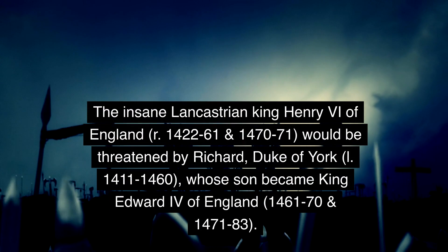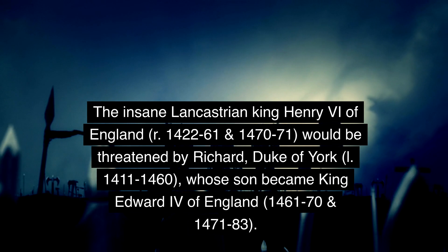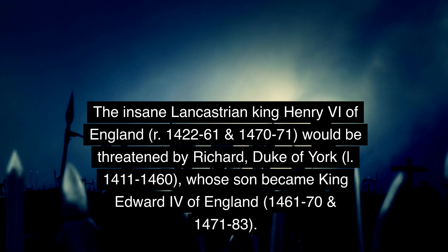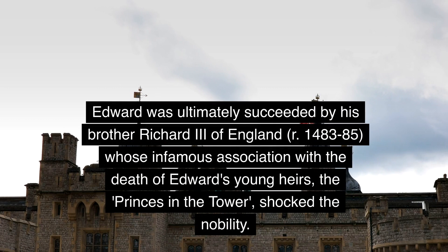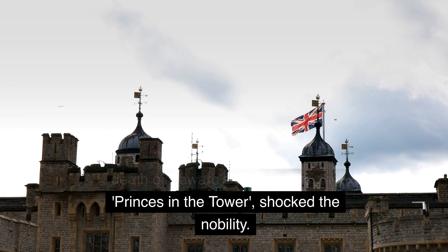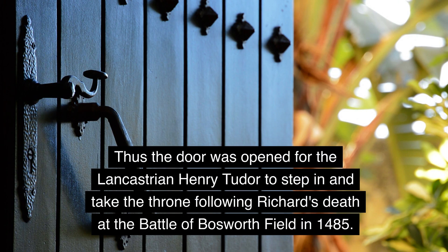The Lancastrian King Henry VI of England (r. 1422–61 and 1470–71) would be threatened by Richard, Duke of York (l. 1417–1460), whose son became King Edward IV of England (1461–70 and 1471–83). Edward was ultimately succeeded by his brother Richard III of England (r. 1483–85), whose infamous association with the death of Edward's young heirs — the princes in the tower — shocked the nobility. Thus the door was opened for the Lancastrian Henry Tudor to step in and take the throne following Richard's death at the Battle of Bosworth Field in 1485.